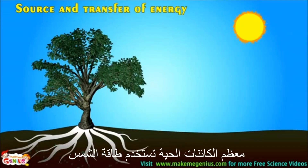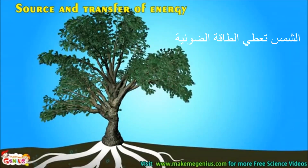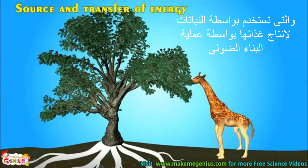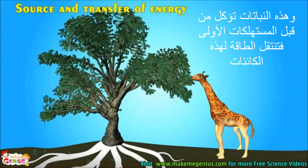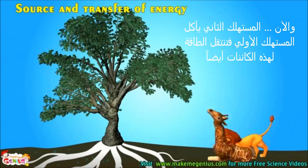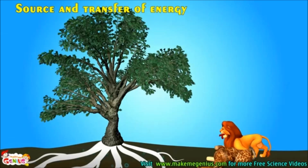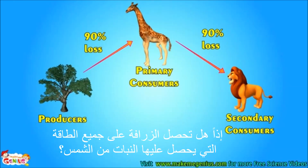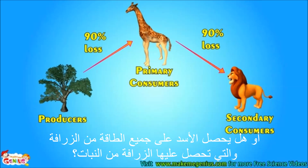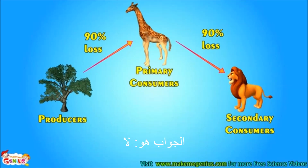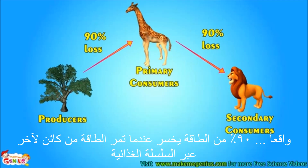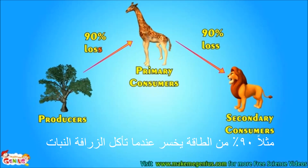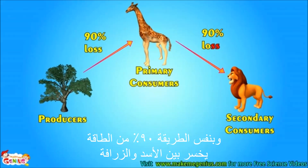From where does this energy come from? Most living species use the sun's energy. This energy is transferred to the body via the food they eat. The sun gives light energy, which is used by plants to make their food by photosynthesis. These plants are eaten by primary consumers and energy is transferred to them. Secondary consumers eat these primary consumers and energy is transferred to them too. So does a giraffe get all the energy from a plant, which the plant gets from the sun? Or does a lion get all the energy from a giraffe? The answer is no. Actually, 90% of energy is lost when it passes from one part of the chain to another, like 90% energy is lost when a giraffe eats a plant, and similarly, 90% energy is lost between lion and giraffe.